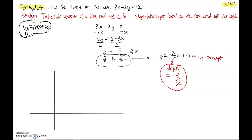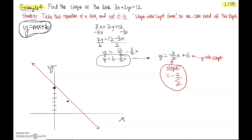Just quickly, if we wanted a picture: the y-intercept is 6, so the graph hits there. With the negative slope, it's going down at a rate of 3 down for every 2 over. So the graph of this line goes through those points — they didn't ask us to graph it, but since the information is just sitting there so nicely, the line really does go through those points.